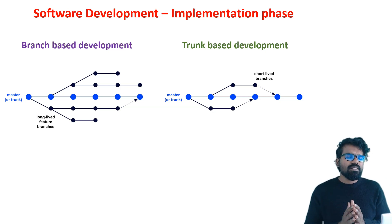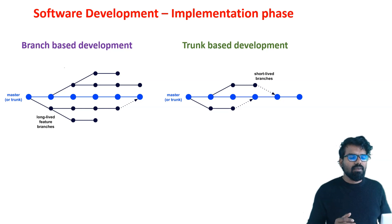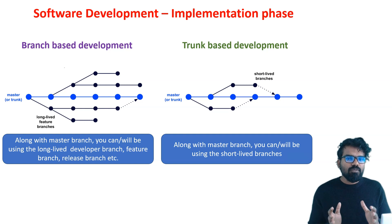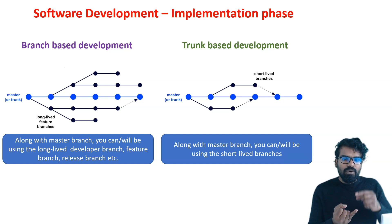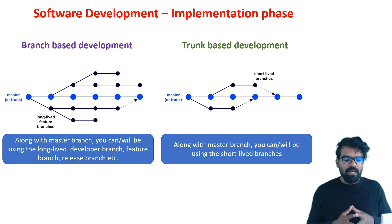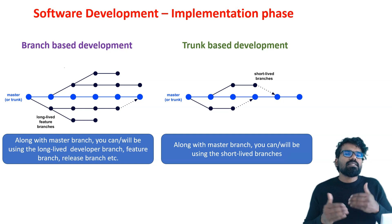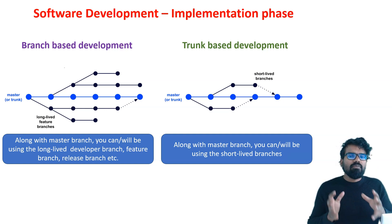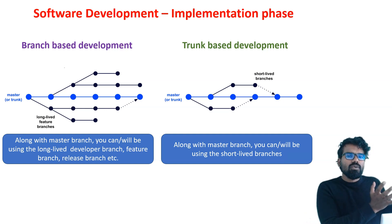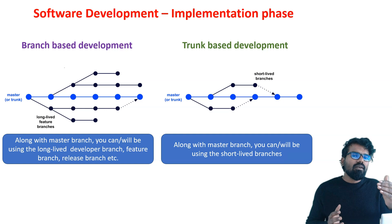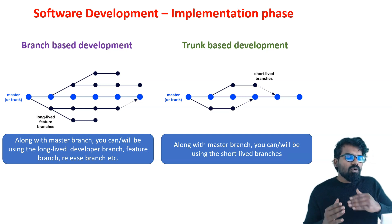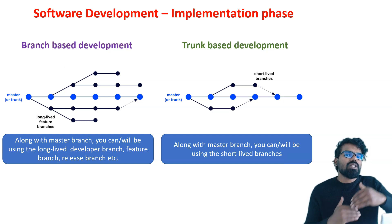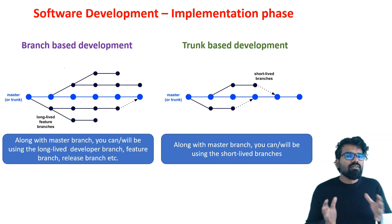Let's look at some common differences between branch based development and trunk based development. With branch based development, you can use many branches — for example, master branch, developer branch, feature branch, release branch, and maybe hotfix branch. The developer branch will be mostly a long-lived branch, meaning people will keep adding features and merging into the development branch. Only when you are sure all changes are ready for production will you merge your development branch into the master branch. But in trunk based development, you only have the master branch and some short-lived branches, and sometimes you directly merge changes into master.